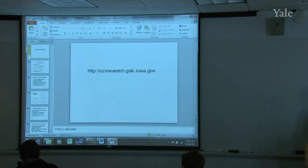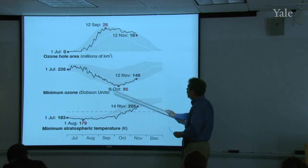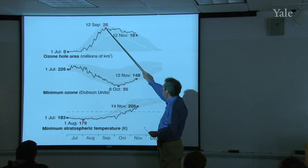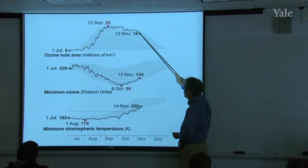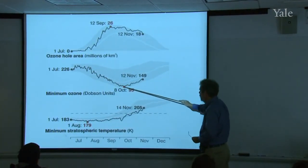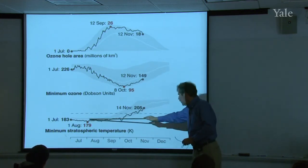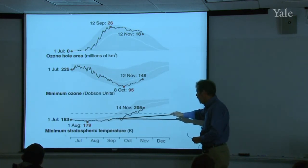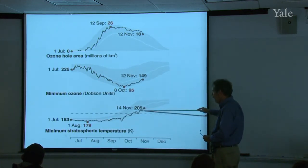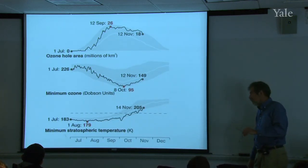You can go to that website yourself and do other animations. This year, the ozone hole area climbed up to the 12th of September and then decreased. The minimum ozone dropped to a minimum and is now increasing as we're into November. I'm going to be talking about this stratospheric temperature — in that part of the world, at that altitude, it's beginning to climb because we're getting out of their winter and towards the southern hemisphere summer.